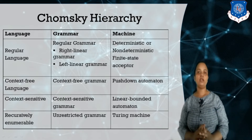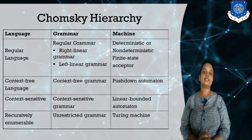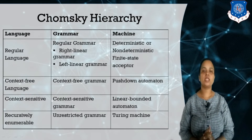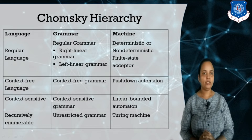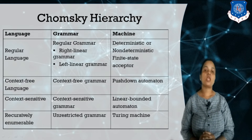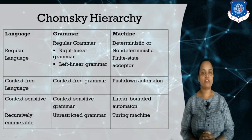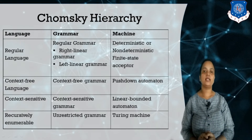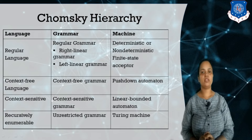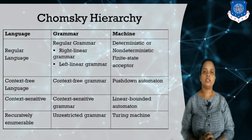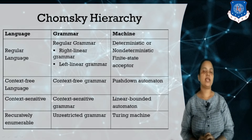First is regular language, which is known as Type 3 grammar. Type 3 grammar means regular grammar and the language it generates is regular language. Regular grammar is of two types: left linear grammar or right linear grammar. The machine that accepts regular languages is deterministic or non-deterministic finite automata.